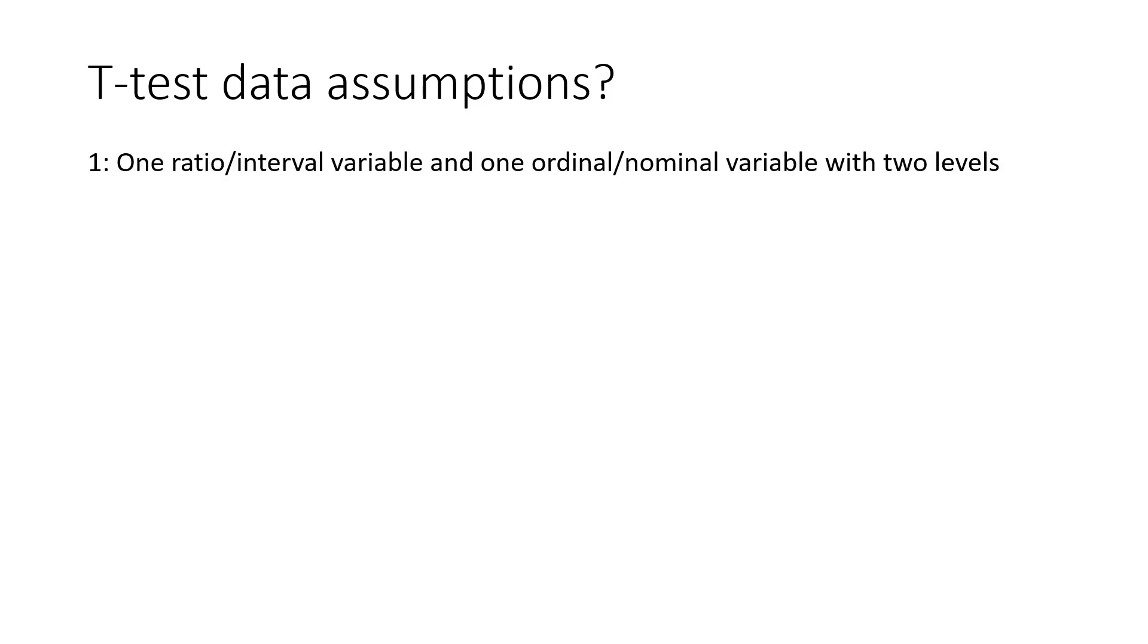Rule 1. You must have one variable that is interval or ratio. A T-test compares means, so we need to have a variable that we can take the mean of. The other variable should be nominal or ordinal as we need to have two groups or categories to compare.